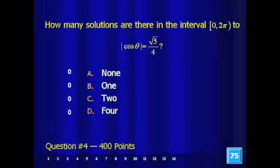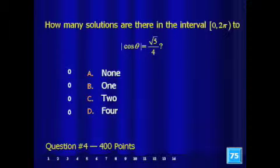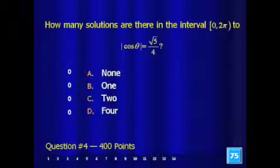Question 4 for 400 points. How many solutions are there in the interval 0 to 2π that includes 0 but doesn't include 2π, for this equation: the absolute value of cosine of θ equals the square root of 5 over 4? The square root is just on the 5. Are there A, no solutions; B, one solution; C, two solutions; or D, four solutions?